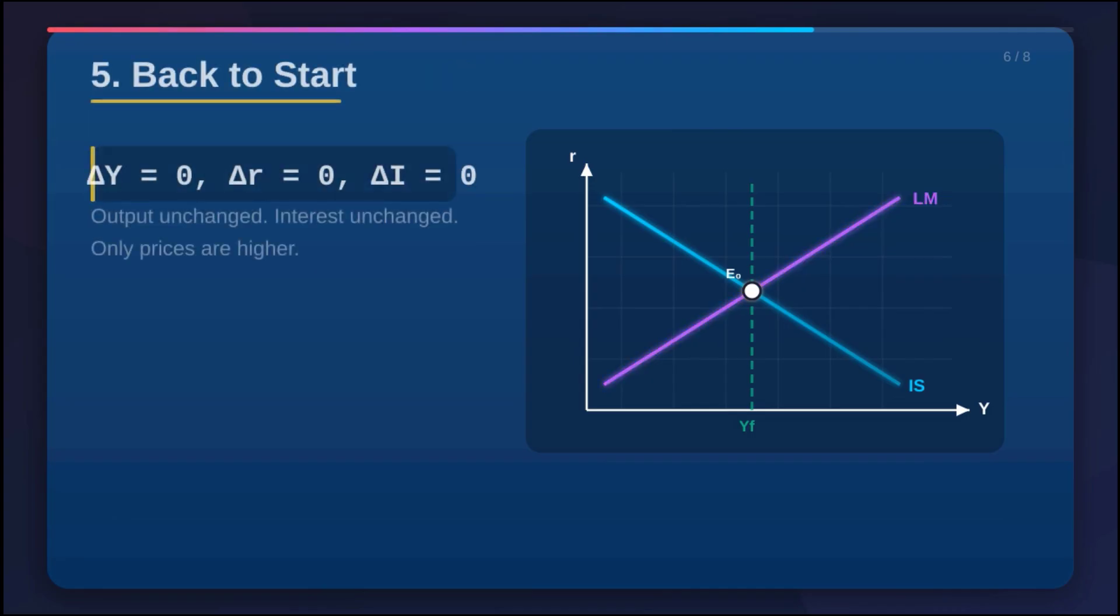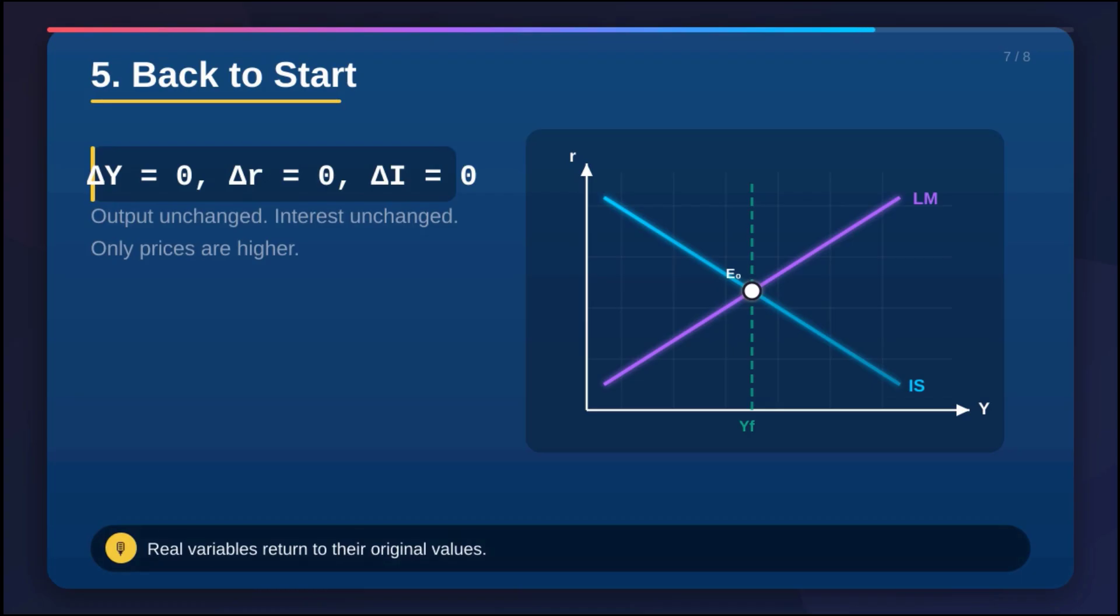Which brings us right to the core idea of neutrality. The whole operation was neutral when it comes to the real stuff. So total output, GDP, no change. Same as before. Real investment is the same. Employment is the same. The only, and I mean the only lasting change, is the price tag on everything.